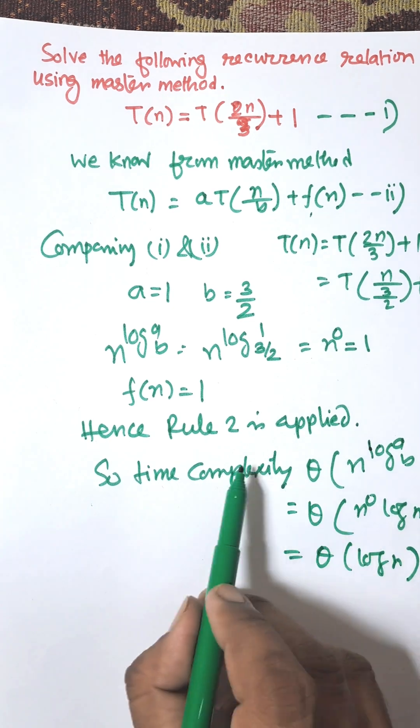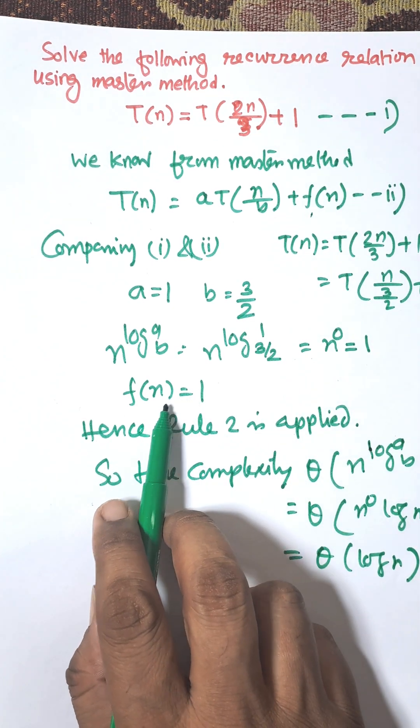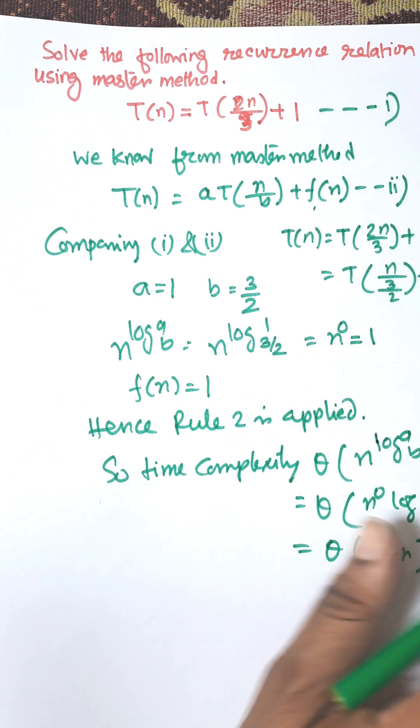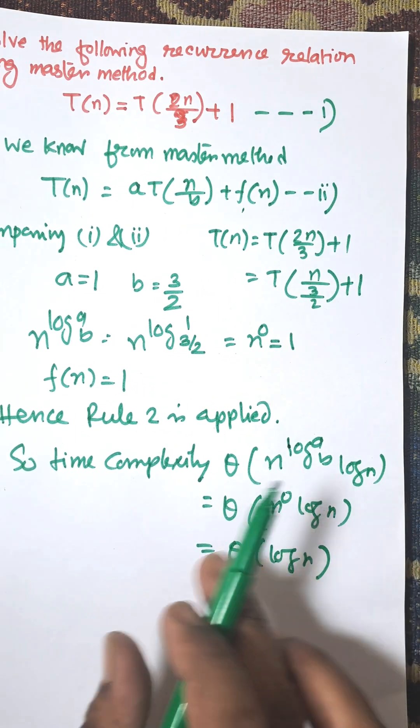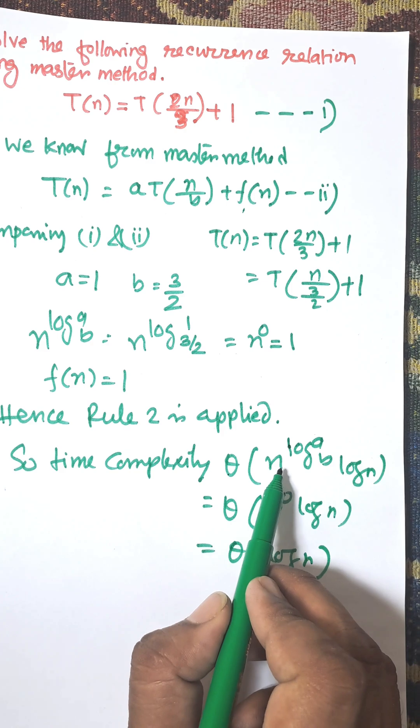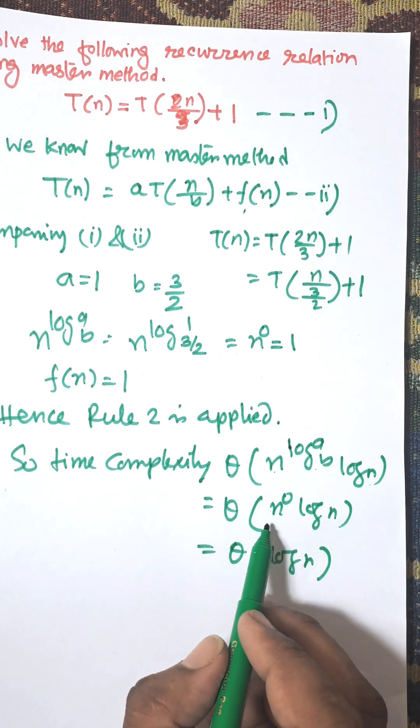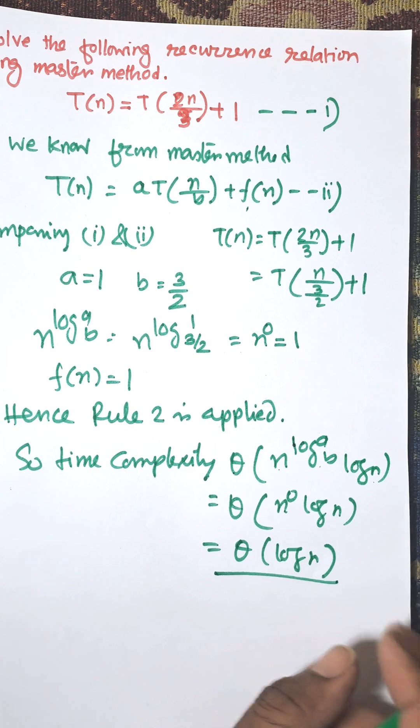So this is the rule when f(n) equals n^(log_b a), both are same. No need to subtract or add eta. So rule 2 is applied and according to rule 2, theta(n^(log_b a) log n). Here log_b a is 0, that equals theta(log n).